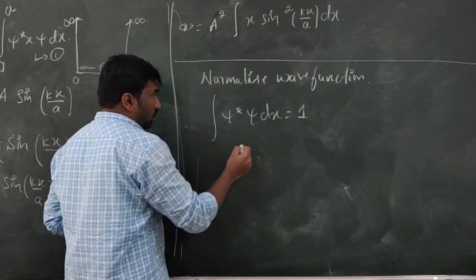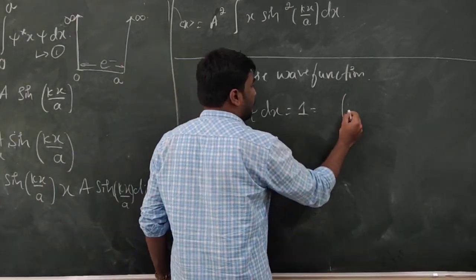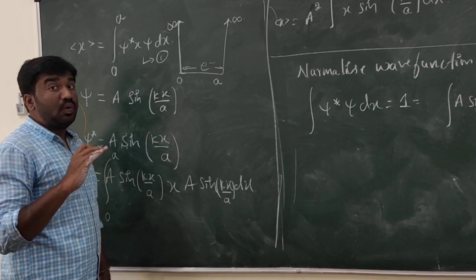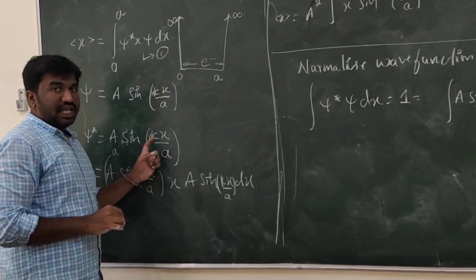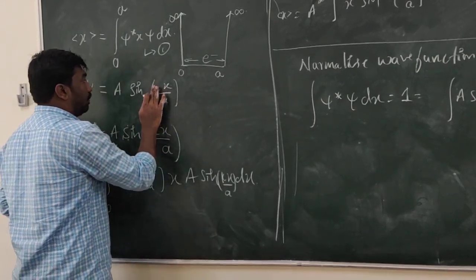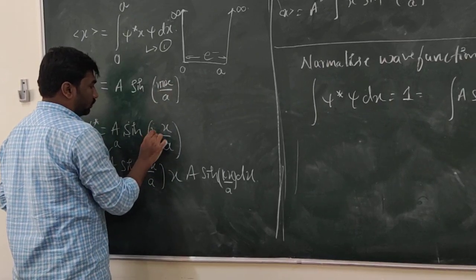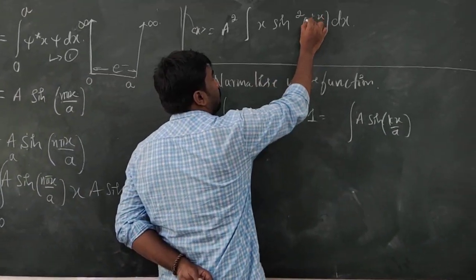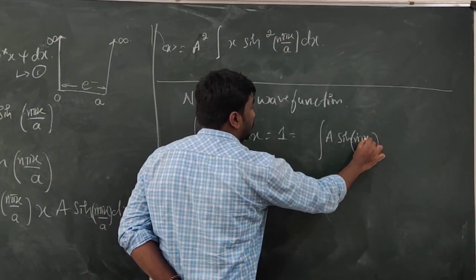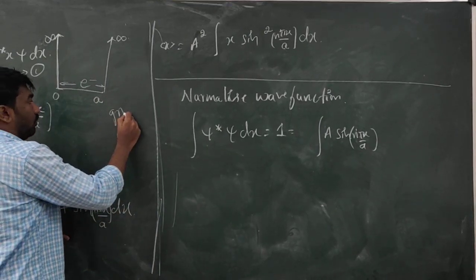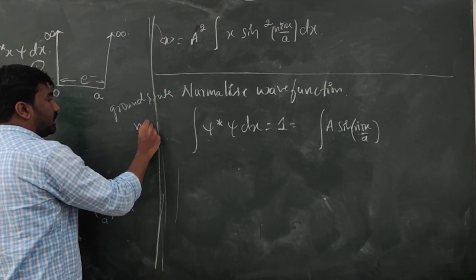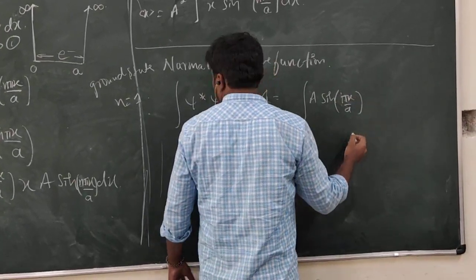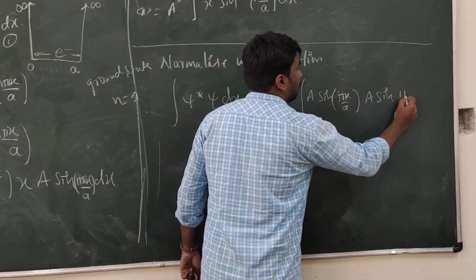This is the normalization condition. The integral of ψ* ψ dx equals 1. Here I am going to use Nπx/a for the general case, but for the ground state, N is equal to 1. So I will take ψ = A sin(πx/a) and ψ* = A sin(πx/a).